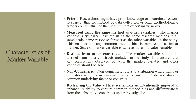Marker variables should be distinct from other constructs included in the study, ensuring that any correlation observed between the marker variable and other variables should be zero. Marker variables should be non-congeneric, meaning items or indicators within the measurement scale do not share a common underlying factor or construct. It is essential that our marker variables should be non-congeneric. Restricting the value — which we will do manually — means restrictions are intentionally imposed to enhance the ability of the marker variable to capture common method bias and differentiate it from the substantive constructs under investigation.